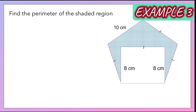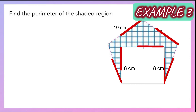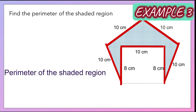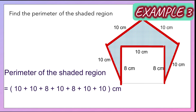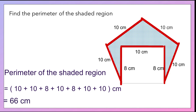Now look at Example 3. Determine the perimeter of the shaded region. Determine the starting point, then total up the surrounding sides of the shaded region. Remember, the small marks on the sides show that those sides have the same length. When you total up all the sides, the perimeter of the shaded region will be 66 centimeters.